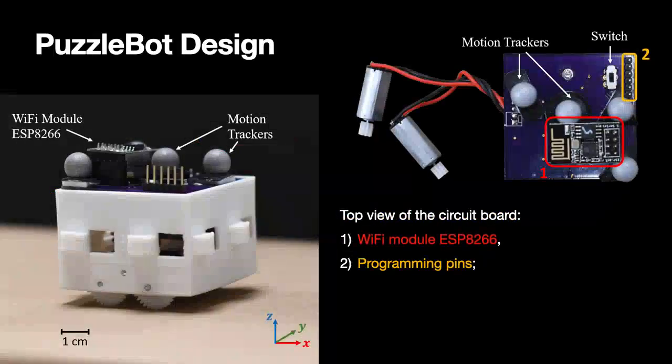Here we present the design of the PuzzleBot. On the left, you may see a picture of the robot. The body length of the robot is 5 cm. Each of these grey balls are the motion trackers for the VICON system.